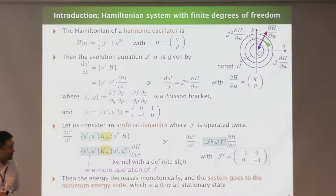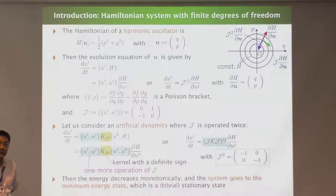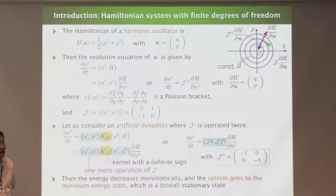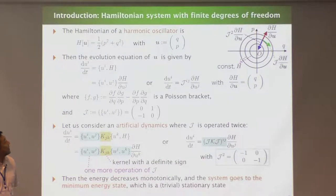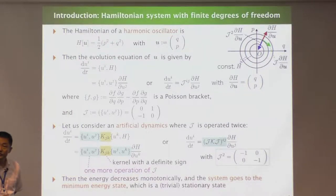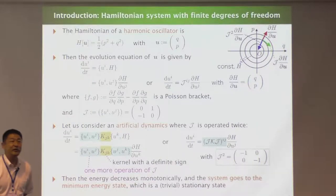The idea comes when we consider an artificial dynamics where the Poisson tensor is operated twice — what happens? Then the direction of the vector changes 90 degrees twice, and the motion occurs in the blue direction. The energy of the system then monotonically decreases, and eventually the system goes to the origin, which is the stationary state of this system — although it is a trivial one.